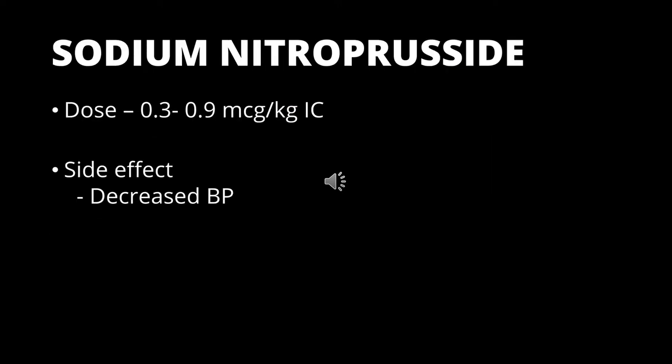Intracoronary nitroprusside may be an alternative to intracoronary adenosine. The dose of intracoronary nitroprusside is 0.3 to 0.9 micrograms per kg. Intracoronary nitroprusside produces equivalent coronary hyperemia and the duration of hyperemia it produces is 25% longer than that by intracoronary adenosine. However, intracoronary nitroprusside decreases systolic blood pressure by 20% compared to intracoronary adenosine, which has literally no effect on heart rate and blood pressure. FFR measured by intracoronary nitroprusside is almost identical to that obtained by intracoronary adenosine.